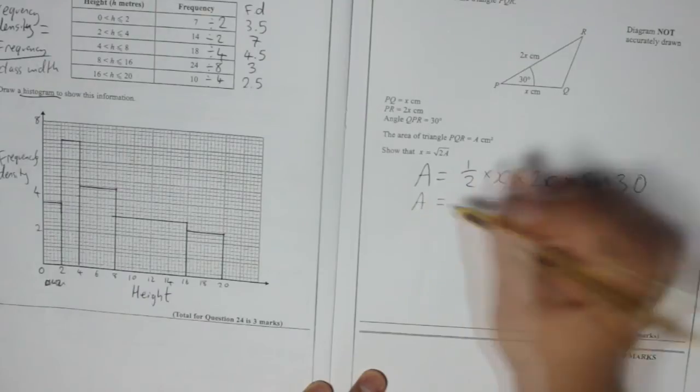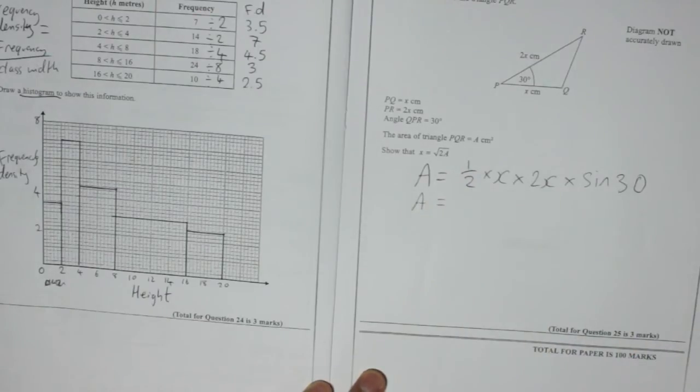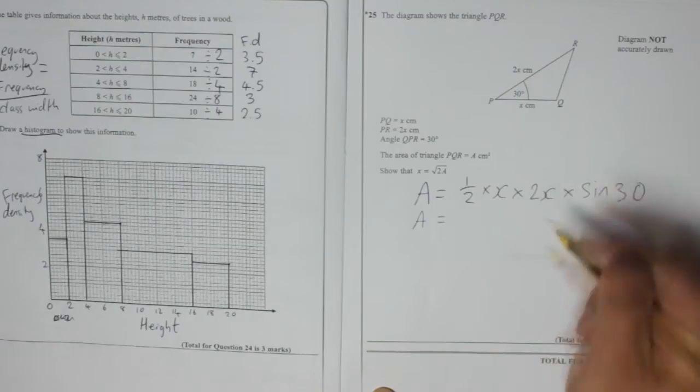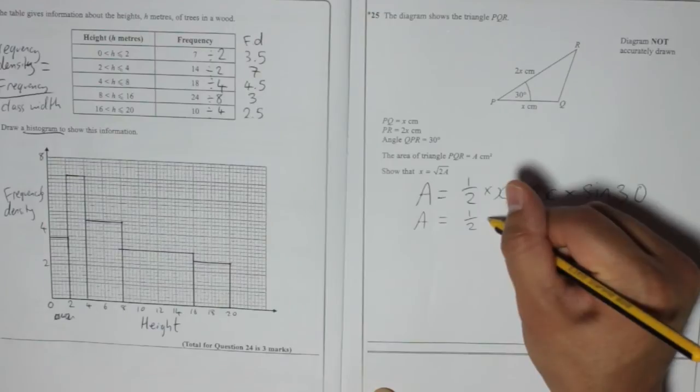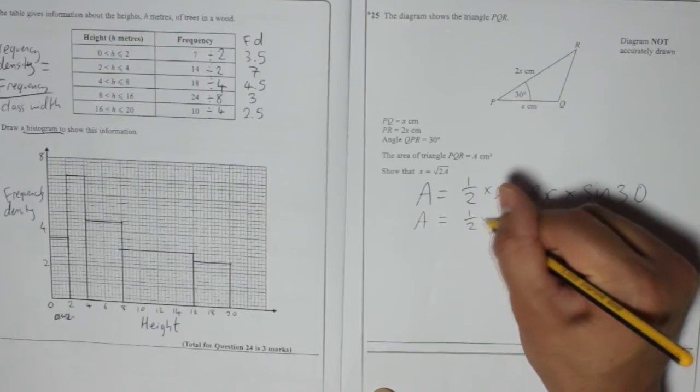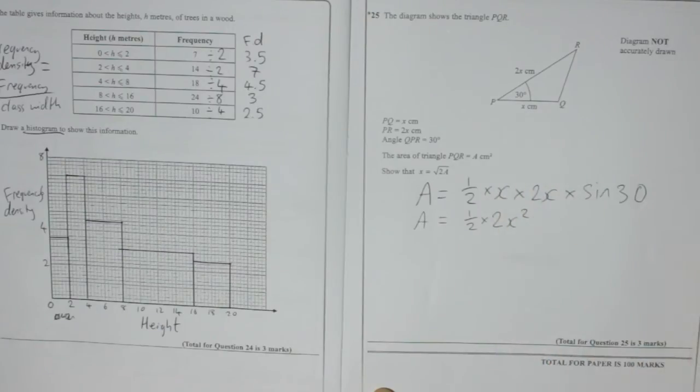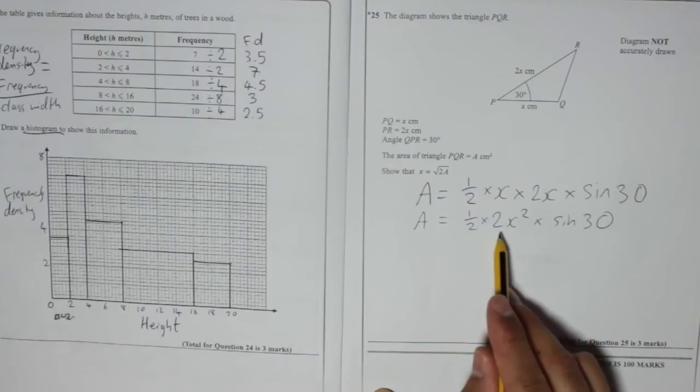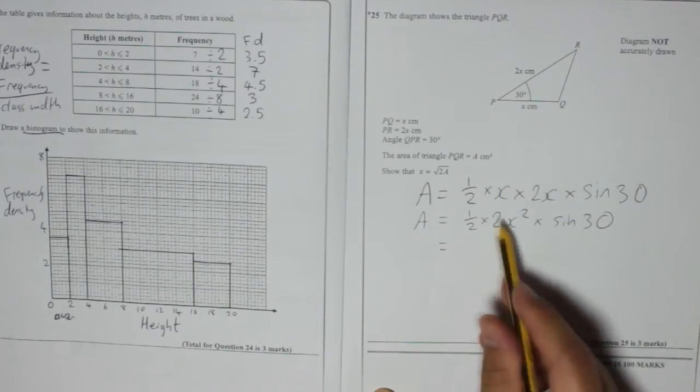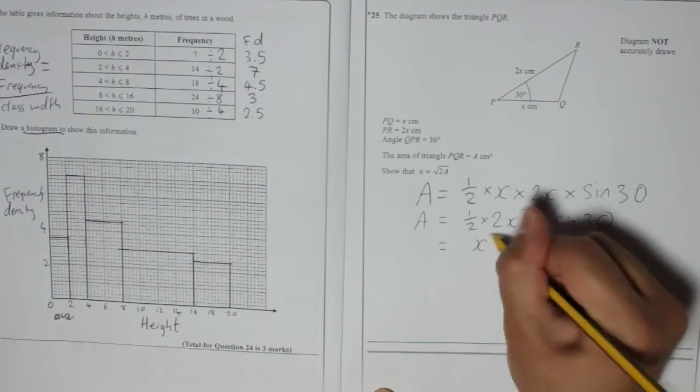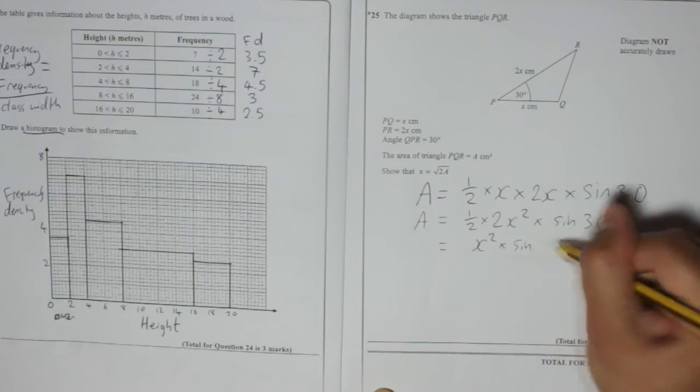So A, now let's just start tidying it up and just see where it gets us, is equal to half, x times 2x is 2x squared, half times 2x squared, times by sin 30. Now, half times 2x squared is obviously just 1x squared, because half of 2 is 1. So that is equal to just x squared times sin 30.